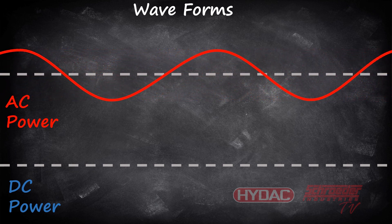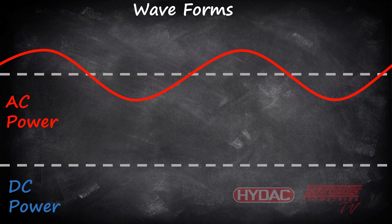Let's quickly talk about hertz. Hertz (Hz) is a unit to measure frequency — it tells how often something happens. A frequency of 1 hertz means that something happens once a second.